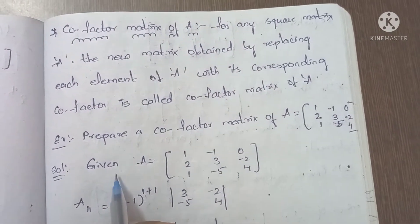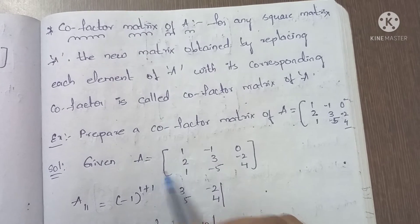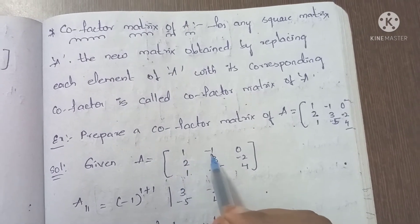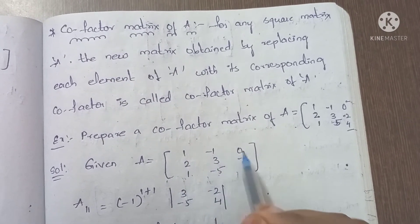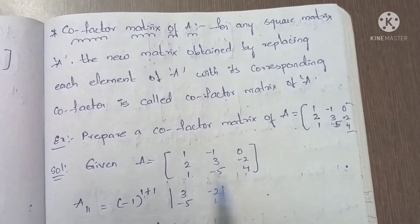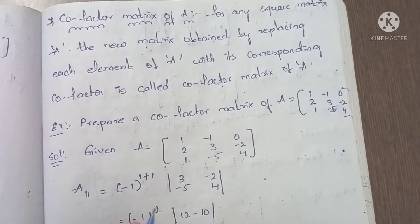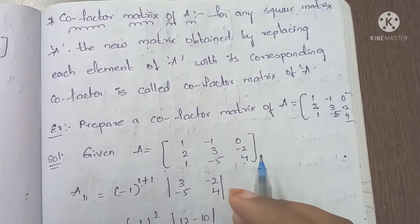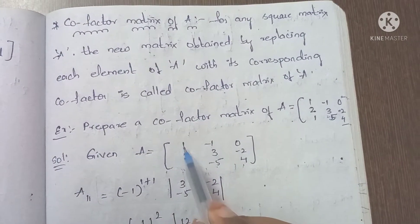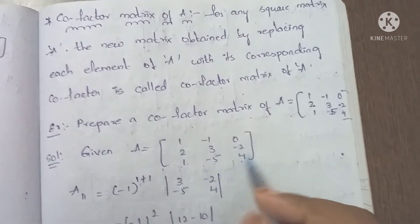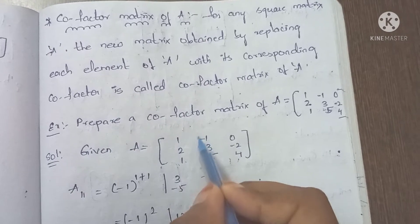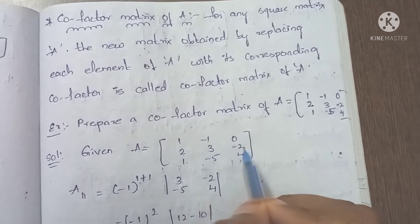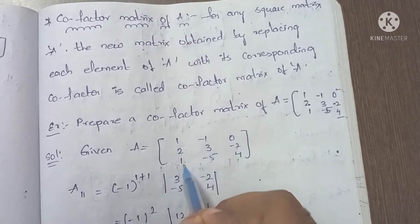Given A equals the 3×3 matrix [1, 2, 1; -1, 3, -5; 0, -2, 4]. We need to find the cofactor of each element: cofactor of 1, cofactor of -1, cofactor of 0, cofactor of 2, cofactor of 3, cofactor of -2, cofactor of 1, cofactor of -5, cofactor of 4.